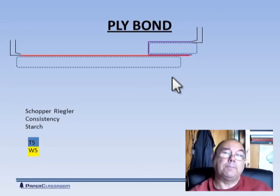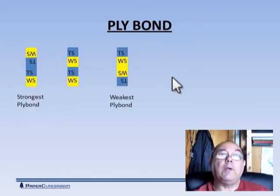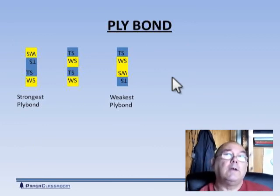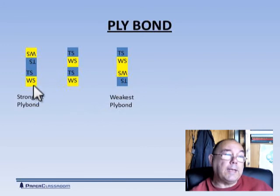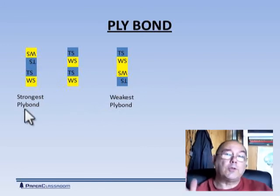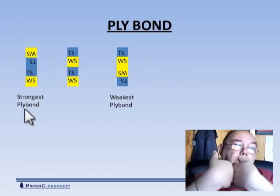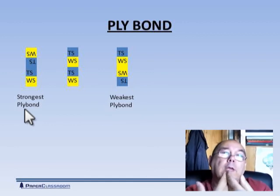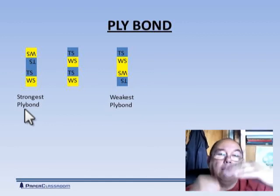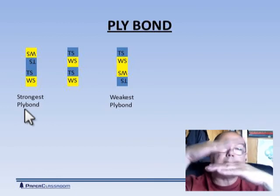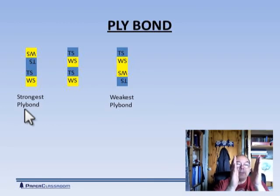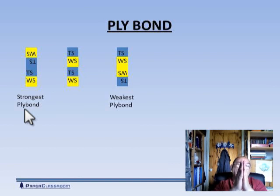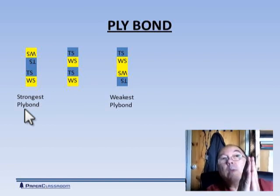There we go. There are three ways of putting two plies of paper together. This one here, as you saw, top side to top side, and that always gives the strongest bond. Another way is top side to wire side. And the final way is wire side to wire side, and the wire side to wire side gives the weakest bond.